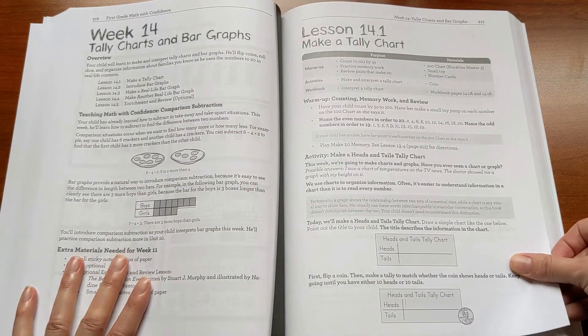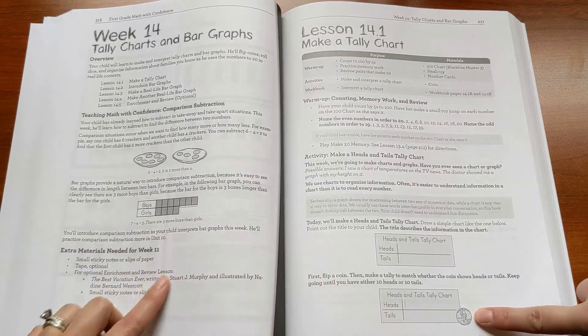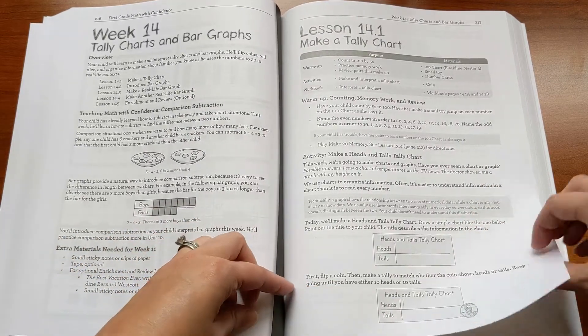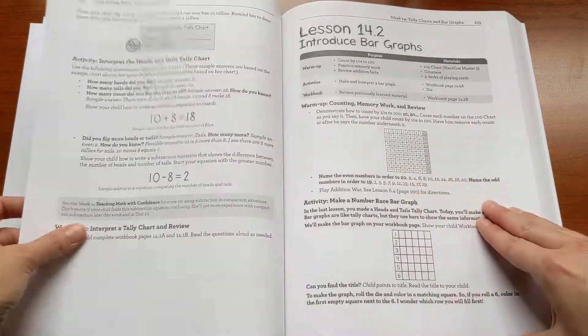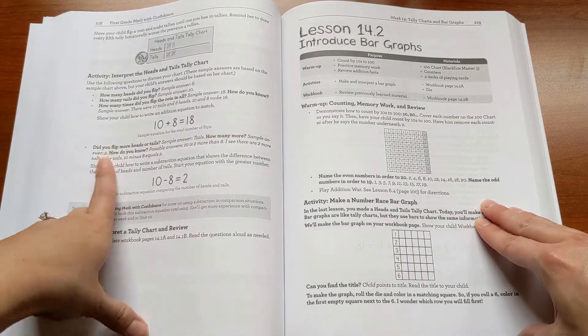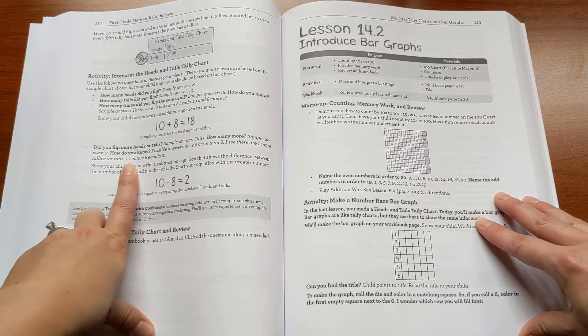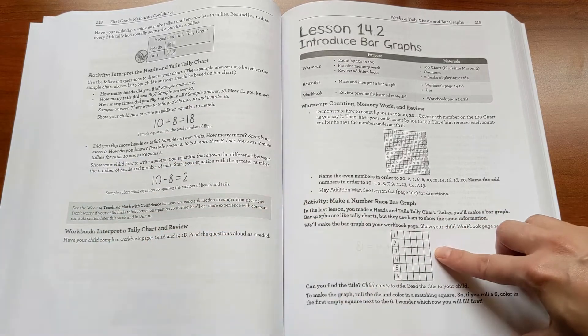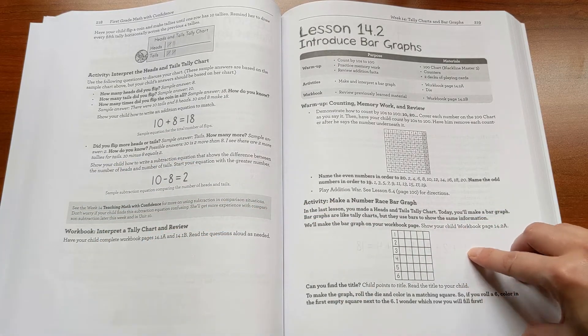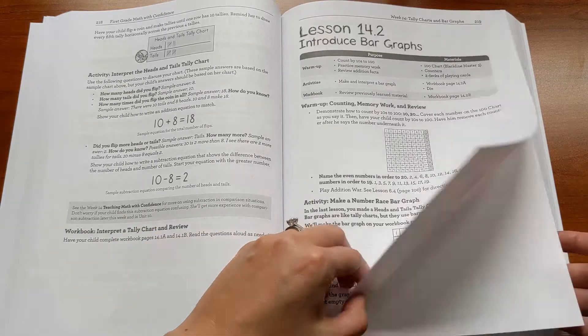So for example, here's a lesson on making a tally chart, where you'll flip a coin, take tallies of how many heads and how many tails you get, and then use that to answer some word problems, understand what it means to make a tally chart. Here's a similar bar graph lesson where you roll a die and make a bar graph of the results.